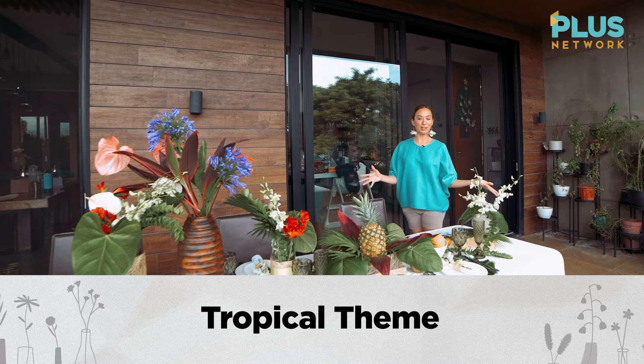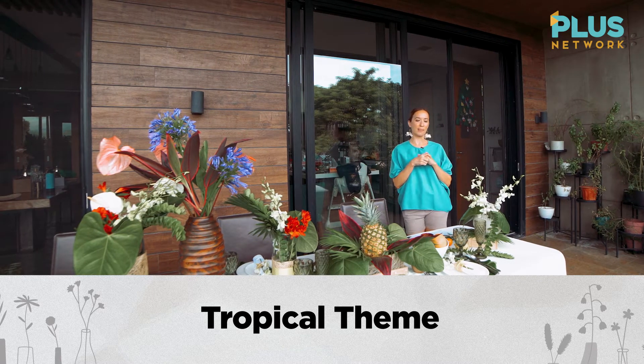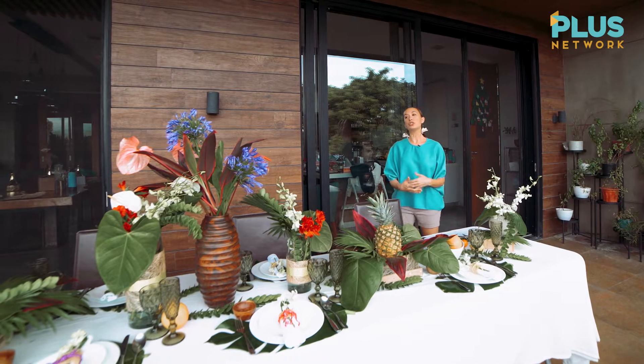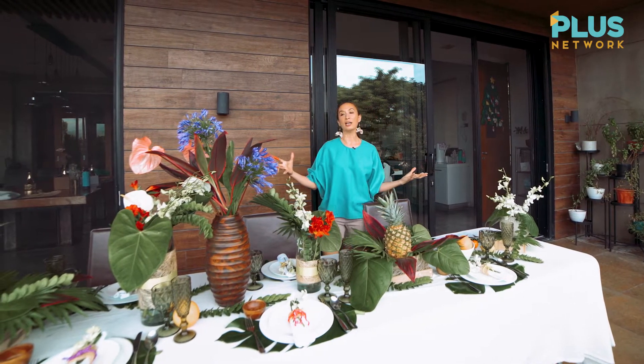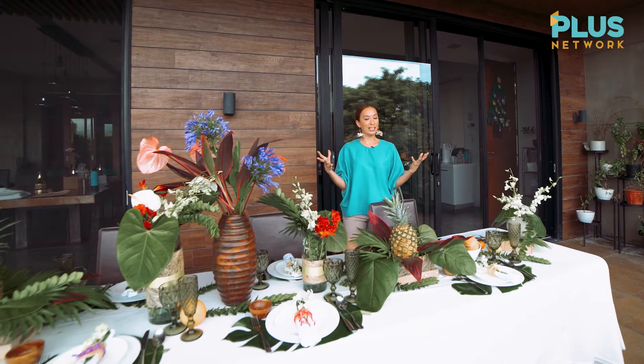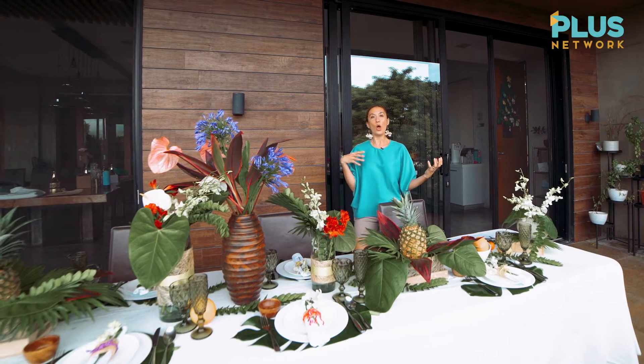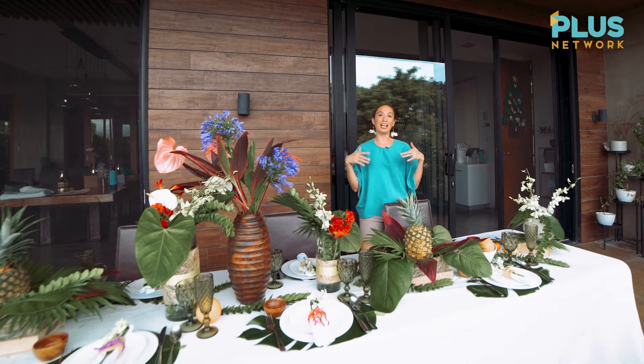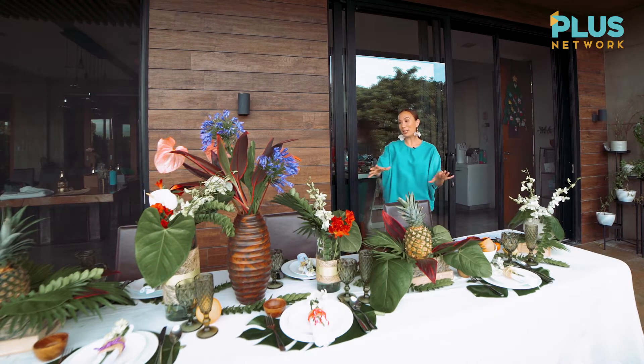So here we have a tropical theme. We chose the tropical theme — sometimes you can do a neutral tropical, but for this one we made it more colorful. There are a lot of elements that have color here. It's like you're in maybe Hawaii, or maybe at a beach somewhere, and you feel like you're on a vacation. If you cannot travel right now, just make your tablescape like a tropical theme and you feel like you're in a certain kind of paradise.